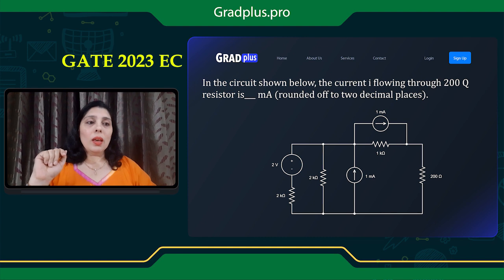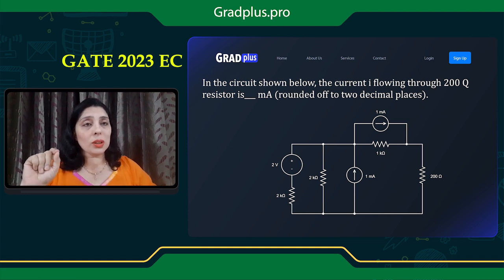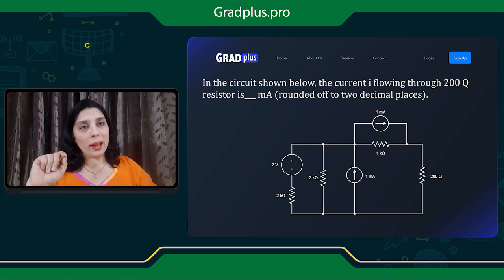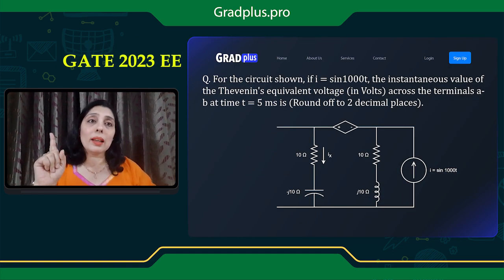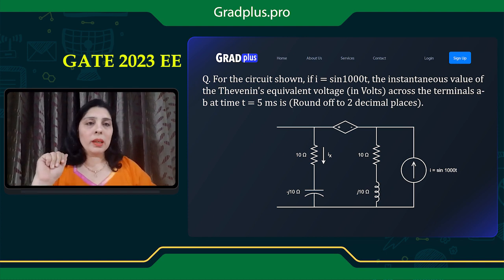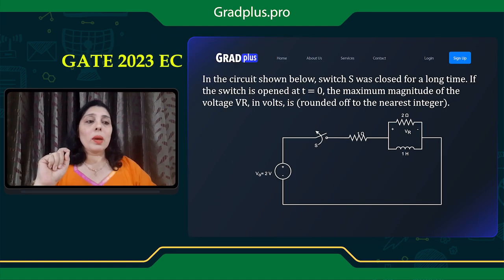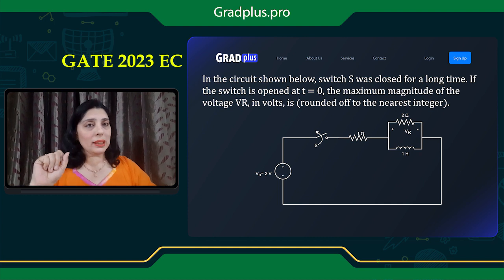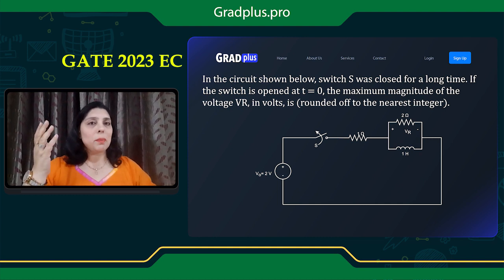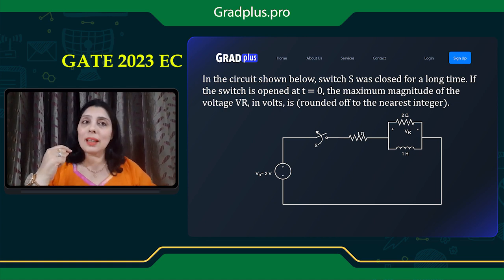In the next question, we are asked to calculate the current through a 200 ohm resistor, and here we can use source transformation and Kirchhoff's laws. In another question, we are asked to calculate Thevenin's equivalent voltage across terminals A and B, and again we can apply Kirchhoff's laws. Then in this question, we are asked to calculate the voltage across a 2 ohm resistor — again Kirchhoff's law applies, but this will also require the concepts of transient analysis.